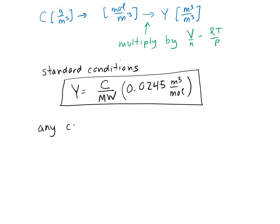Under any conditions, the equation is Y equals the mass concentration divided by the molecular weight times this more general volume per mole, which is RT over P.